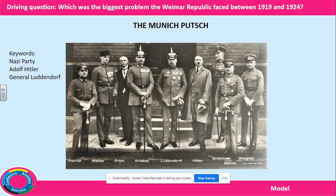The final group you need to be aware of are the Nazi Party and their attempt to seize control of the government in Munich. In 1923, Adolf Hitler, the leader of the Nazi Party, and General Ludendorff attempted the Munich Putsch. They believed that democracy led to a weak government and thought there should be one political party with one leader. Their plan was to overthrow the government and put Hitler and Ludendorff in charge of the country.